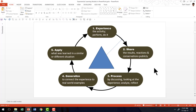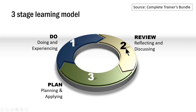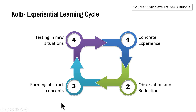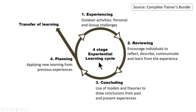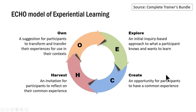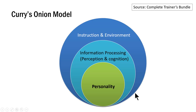I hope you liked this simple graphic that showed the Experiential Learning Cycle. There are different models for the Experiential Learning Cycle and I'm going to show you various examples from our Complete Trainers Bundle. There is a simple three-stage learning model covering planning, doing, and reviewing. This is Kolb's Experiential Learning Cycle with four stages. There is also a four-stage Experiential Learning Cycle where, once the cycle is done, a transfer of learning is represented by an arrow. This one is the Echo Model of Experiential Learning — a really attractive graphic. Simple tweaks like these make your slides stand out. And this one is Curry's Onion Model.